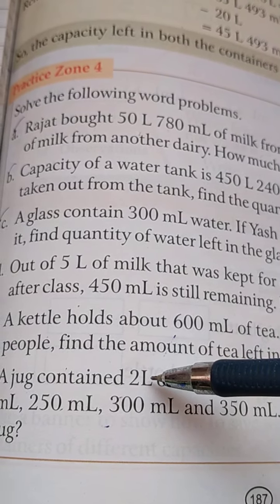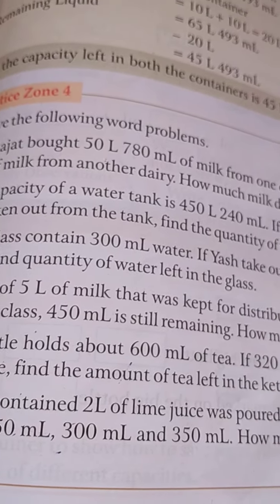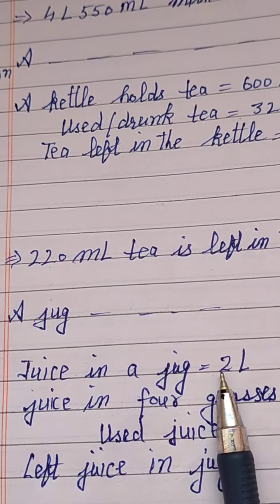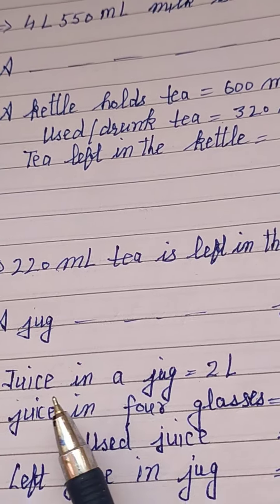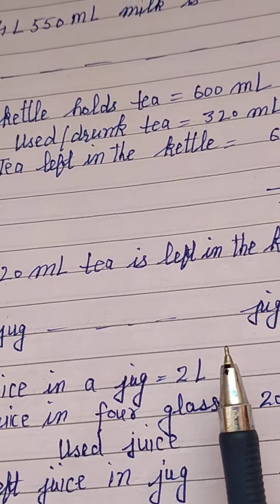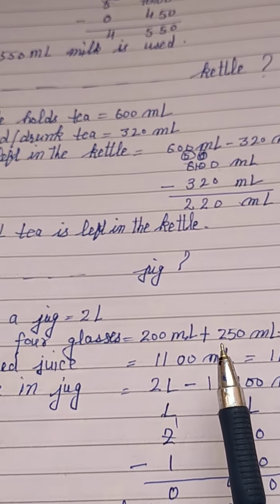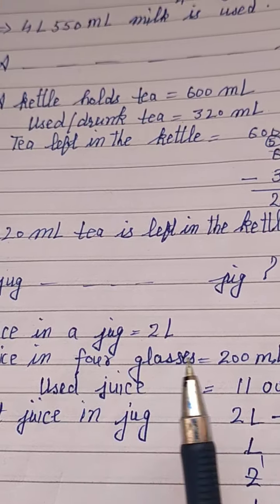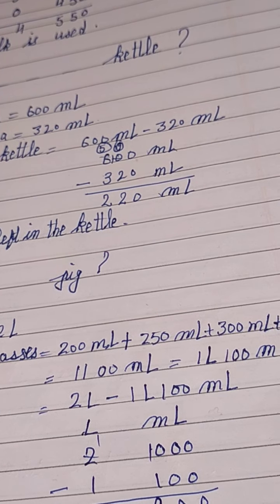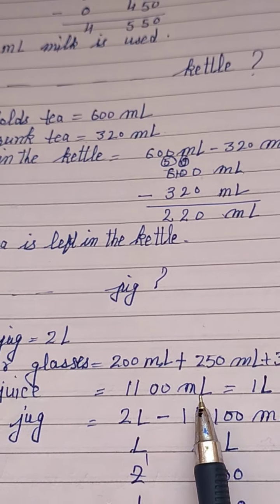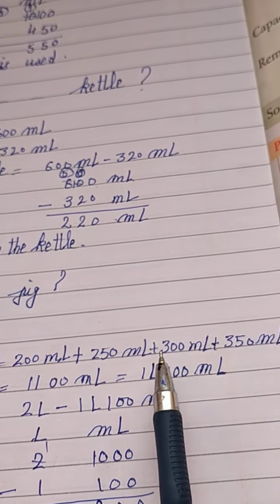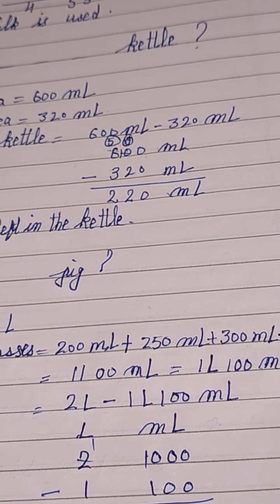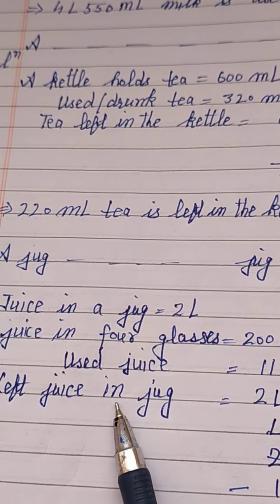Total quantity of juice is 2 litres. We have to find the juice left. The juice poured out is: 200 millilitres plus 250 millilitres plus 300 millilitres plus 350 millilitres. After adding all these, we are getting 1100 millilitres. Since these are all in millilitres, 1100 millilitres equals 1 litre and 100 millilitres of used juice.